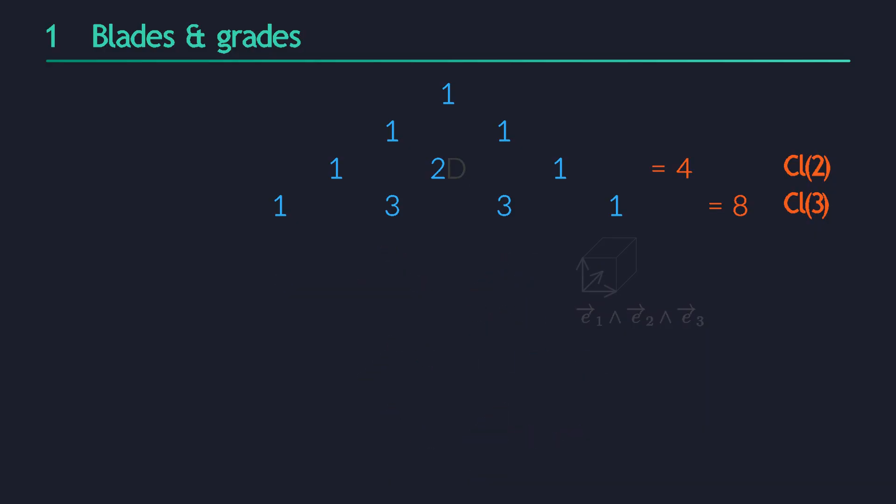Another thing that you can see in the triangle is that the first and final numbers on each row are always going to be 1. The first one tells us that there's only a single basis scalar. All other real numbers are just multiples of it. The final one tells us that there's only a single basis blade of the highest possible grade. That's the one where you wedge all of the basis vectors together.